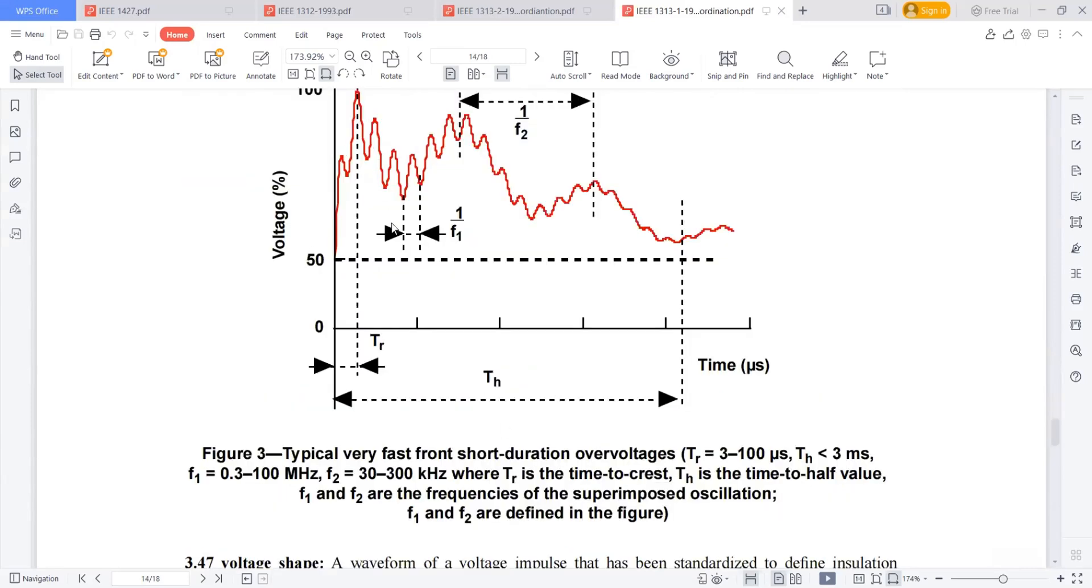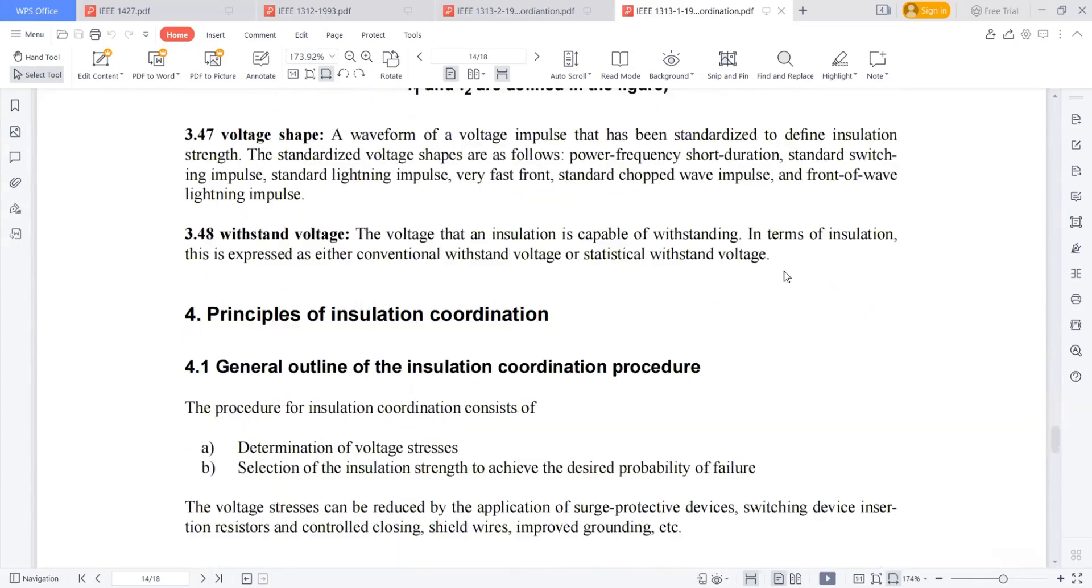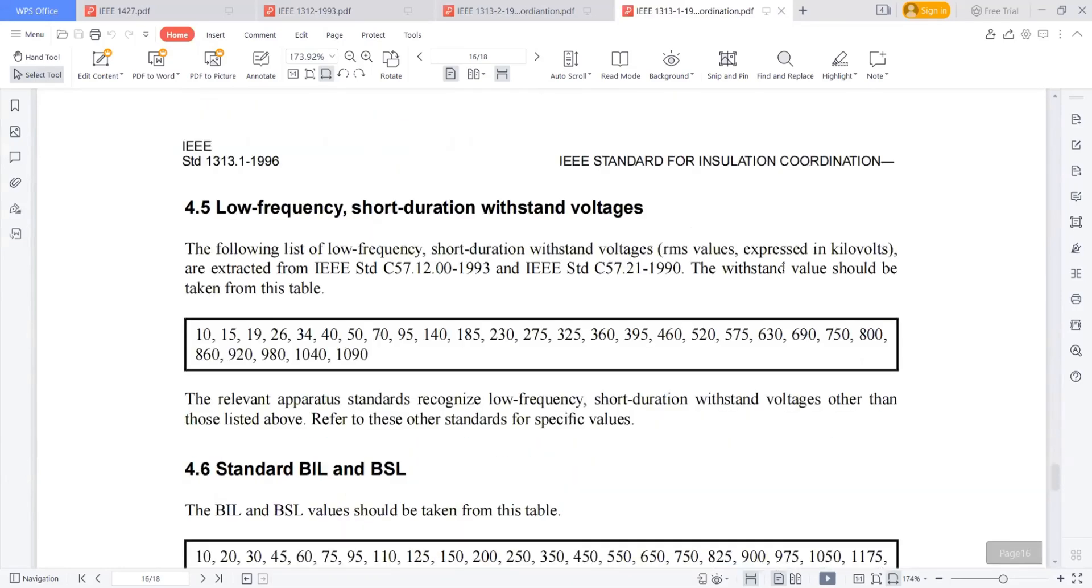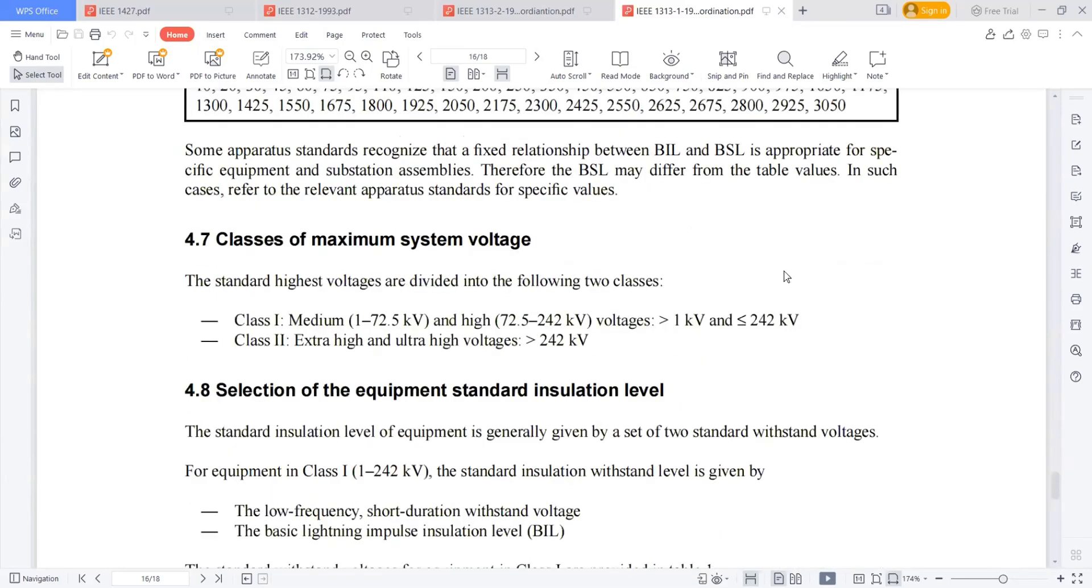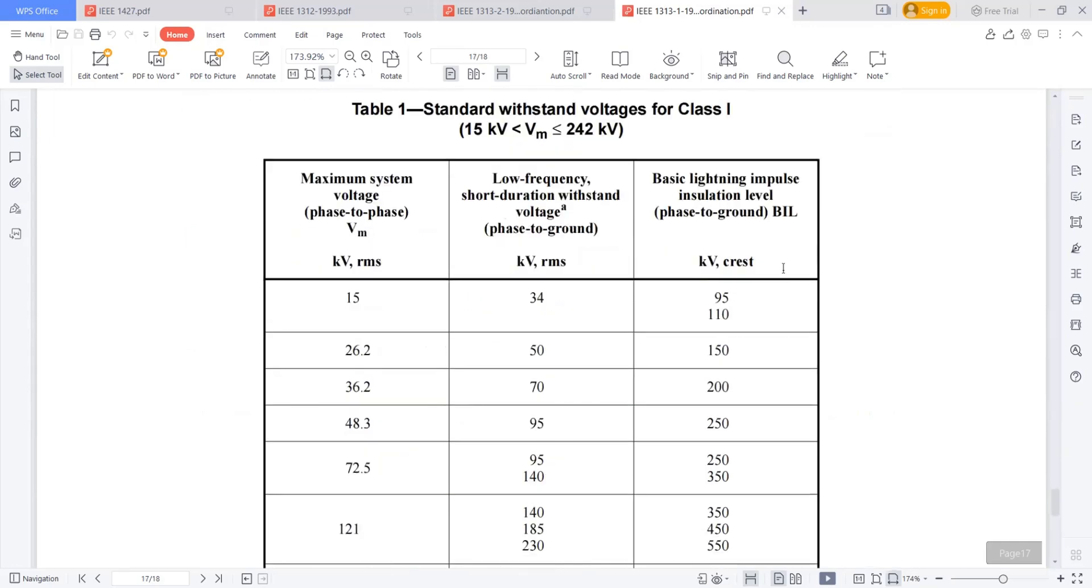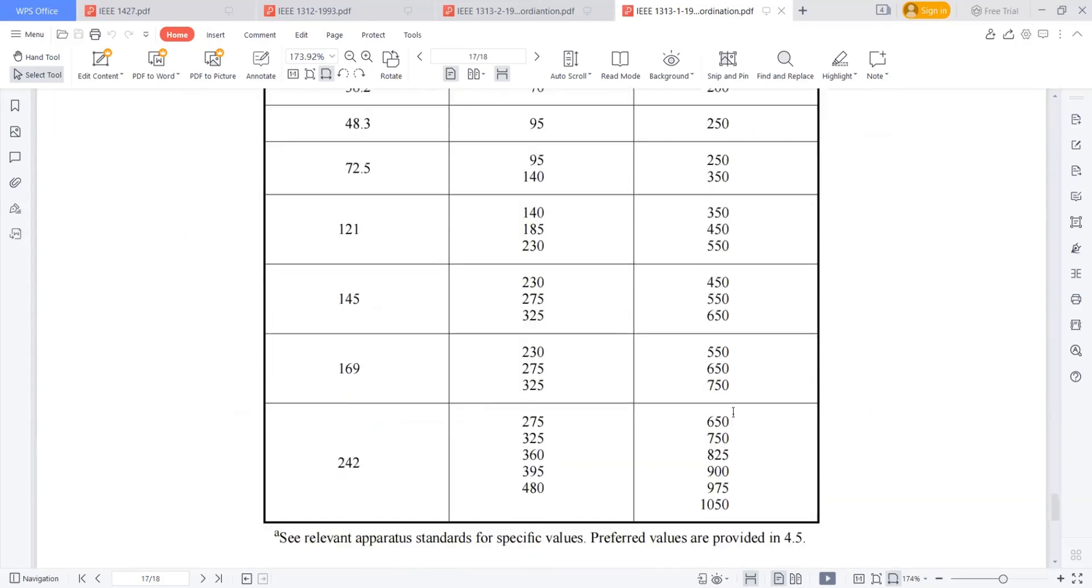This is some kind of very fast transient voltages generally we can see in the GIS applications. This is a simple way of seeing the installation coordinations study. In some cases, generally in Indian projects, we are not doing the installation coordinations study and we are directly taking the values of BAL and BSL levels from this table itself.